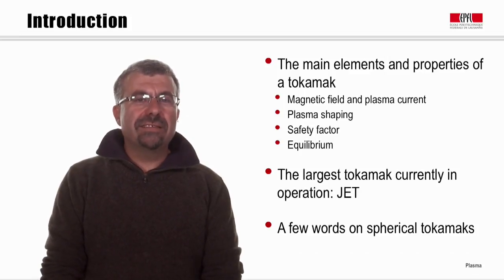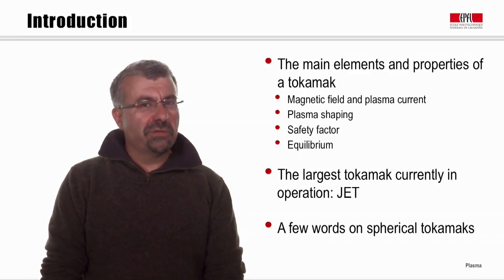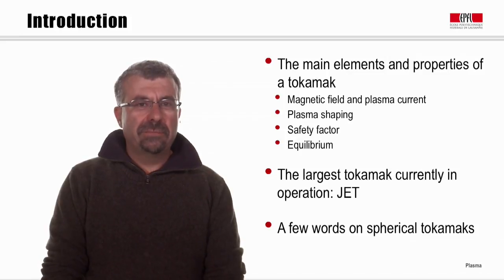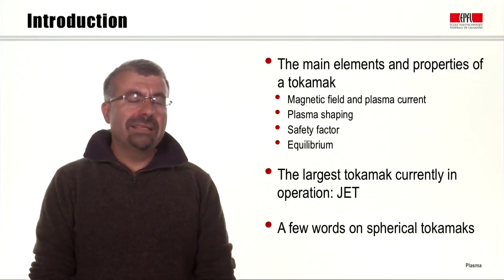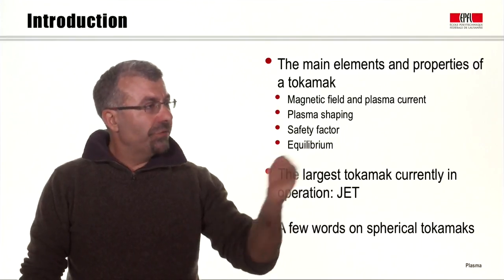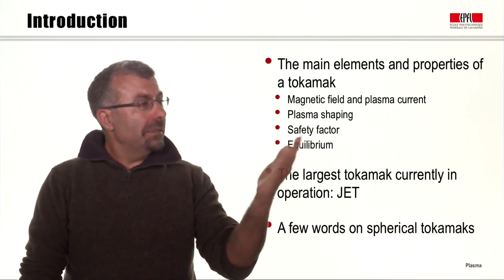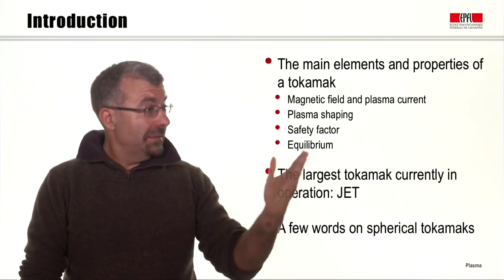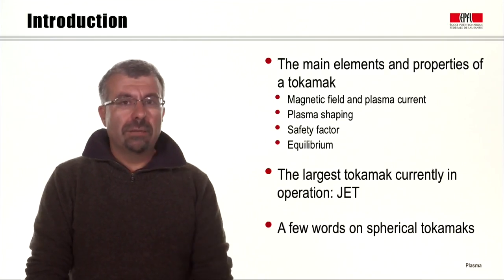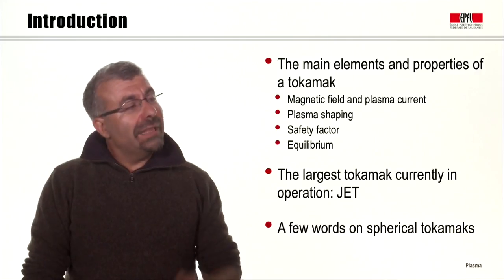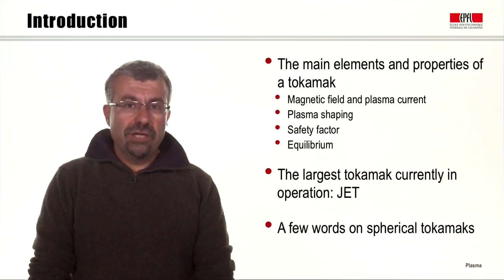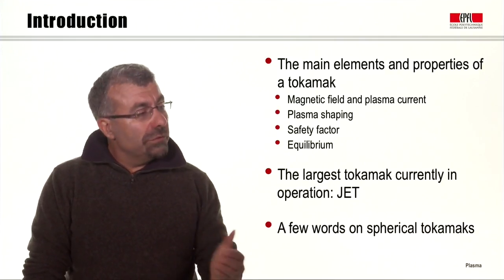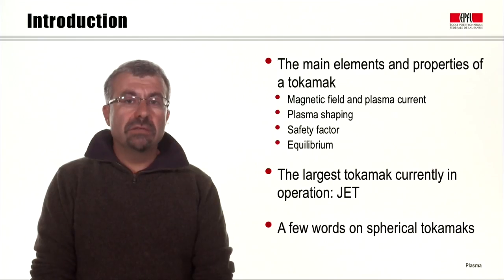Welcome to the course on plasma physics and application to fusion energy, astrophysics and industry. My name is Duccio Testa, and in this lecture we will discuss the tokamak concept. We will start with the main elements and properties of a tokamak: the magnetic field and plasma current, plasma shaping, the safety factor, and the equilibrium in a tokamak. We will then describe briefly the largest tokamak currently operating in the world, the JET tokamak in England, and conclude with a few words on spherical tokamaks.